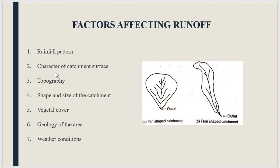The second factor is the character of the catchment surface. The catchment area is the area from which rainfall flows into a river, lake, or reservoir. If rain falls onto a rocky or clay area, infiltration is not possible and the amount of runoff will be more. On the other hand, if it is a sandy area, all the water will be infiltrated and runoff will be less, because sandy areas have more voids so infiltration takes place very quickly.